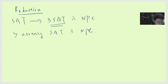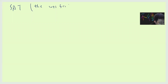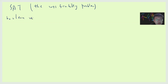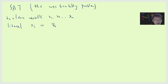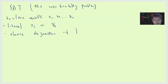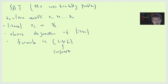Let me describe some basic definitions. SAT, basically called the satisfiability problem. The idea is very simple: you have some boolean variables x1, x2, up to xn. You can define a thing called a literal. A literal is just xi or not xi — basically xi-bar. And this is the definition of a clause. A clause is a disjunction of literals.